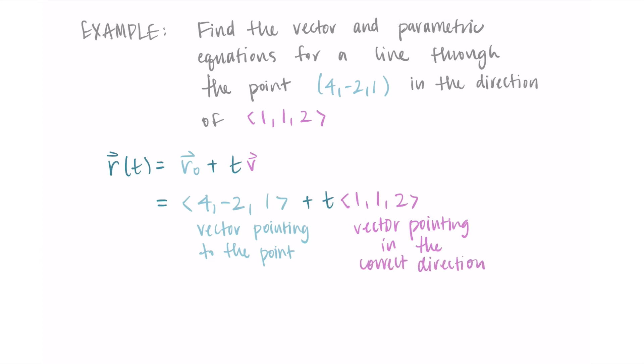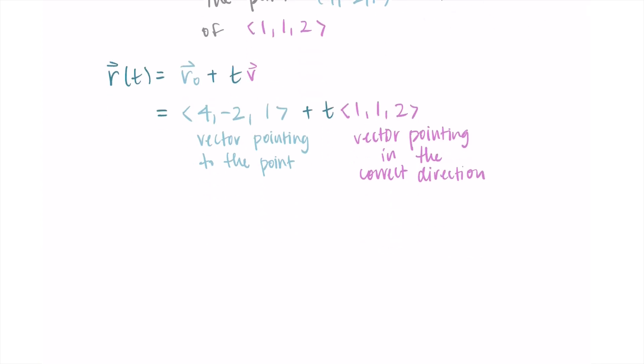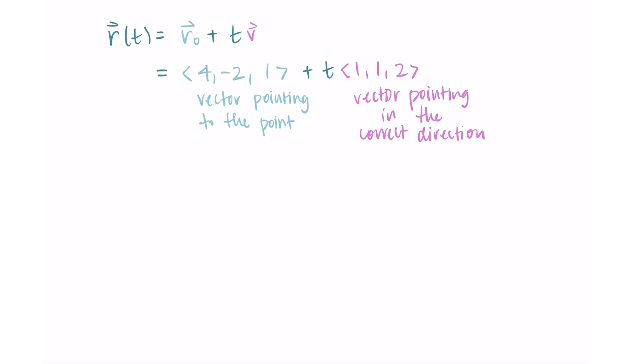I visualize this as a vector that points to the point and a vector that points in the direction — by adding them I get the combined result. You can think about it geometrically using vector addition, or just apply the formula and put in the right information.